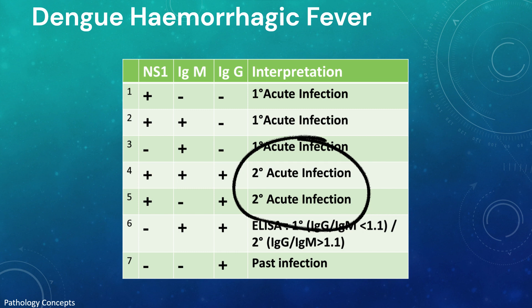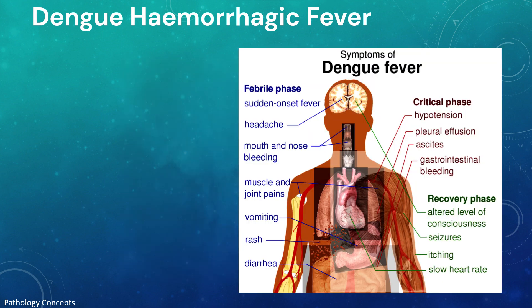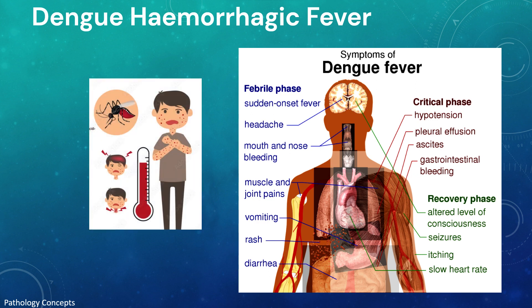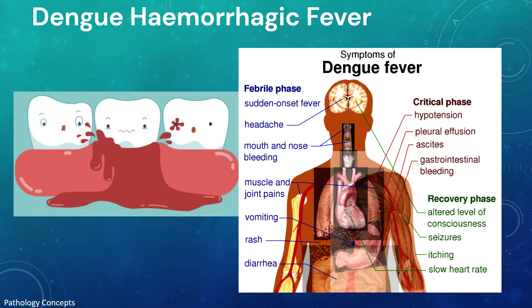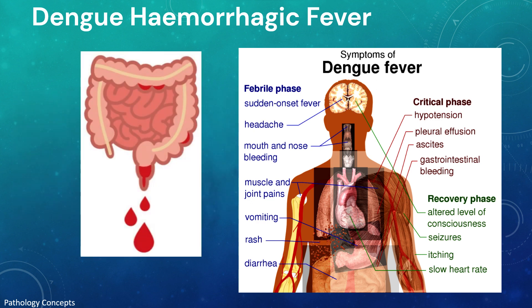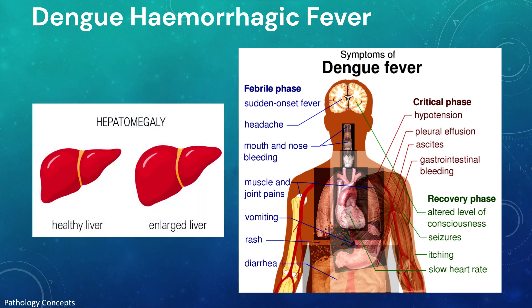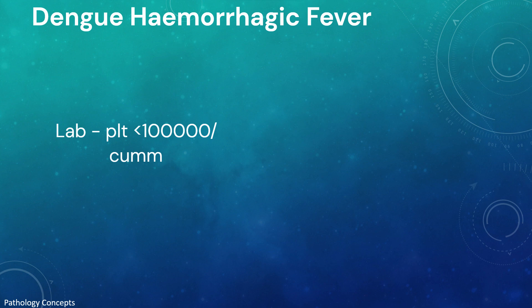Dengue hemorrhagic fever is frequently seen during secondary dengue infection. The acute febrile phase is characterized by high-grade fever lasting two days to one week, and hemorrhagic episodes in at least one of the following forms: petechiae, purpura, ecchymosis, epistaxis, gingival and mucosal bleeding, gastrointestinal bleeding, injection site bleeding, hematemesis, and/or melena. A positive tourniquet test and hepatomegaly are also noted.